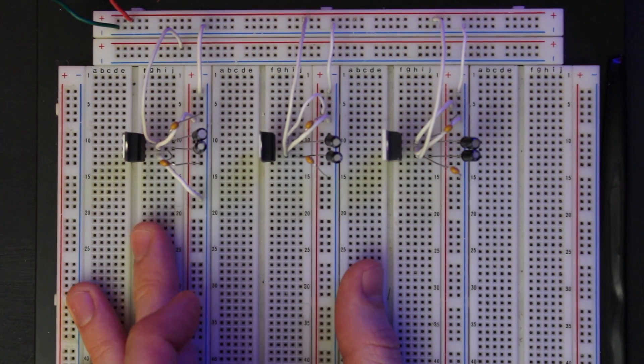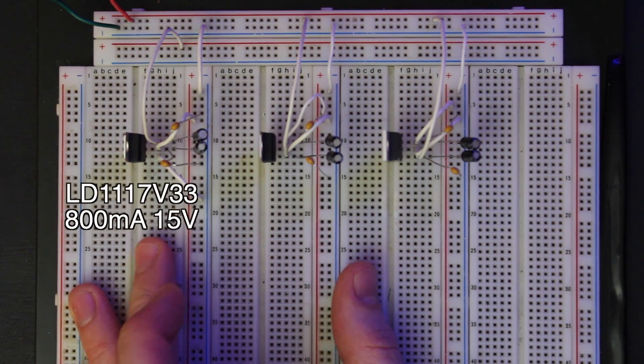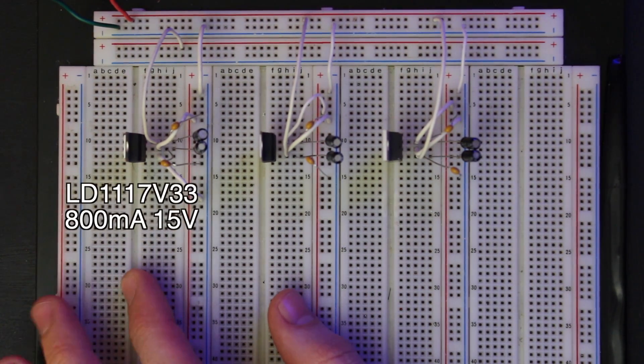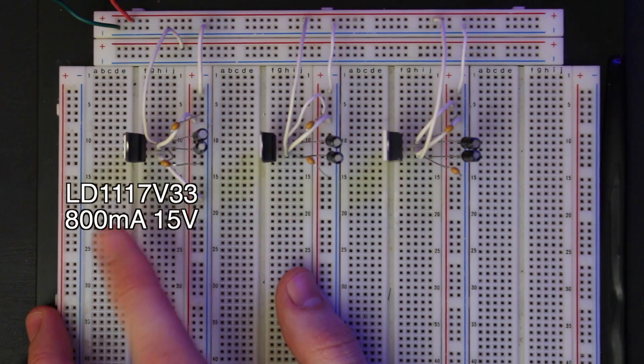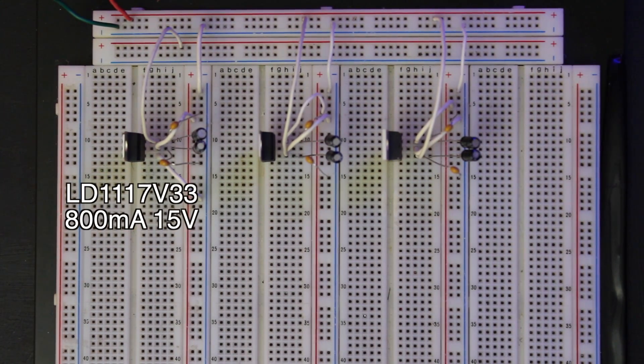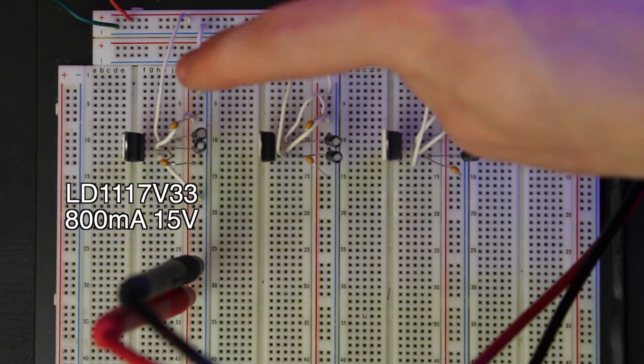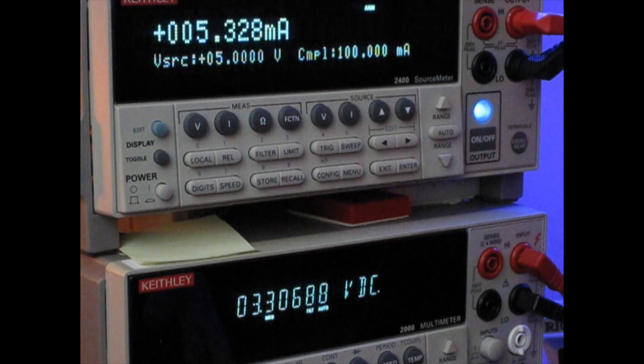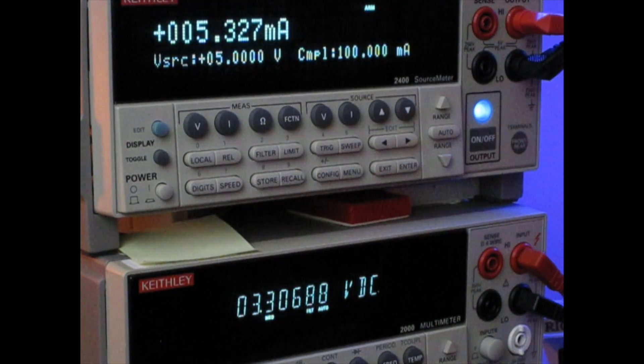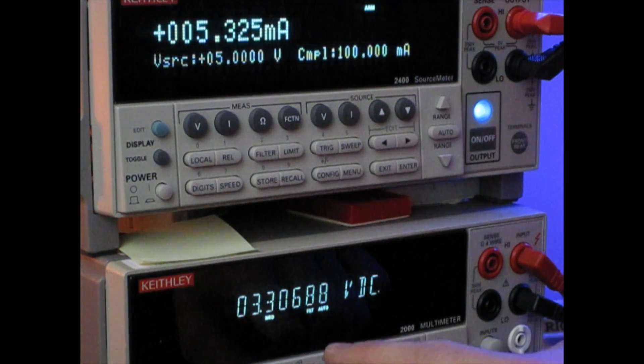So the first one here I want to look at is the LD1117V33. And this is very common. It can do 800 milliamps with a max input voltage of 15 volts. So let's hook that up and see what the no load current draw of that regulator is. So we have absolutely no load on this whatsoever. Let's also make sure that it can hold 3.3 volts when there is no load. So let's take a quick look at that. Okay, so we only have that first regulator hooked up. And you can see that with a 5 volt input, we're pulling about 5.3 milliamps.